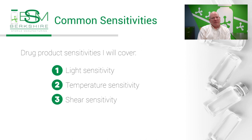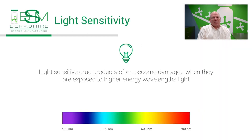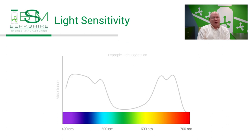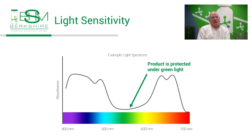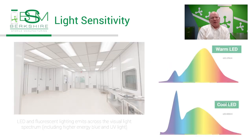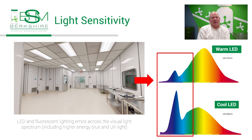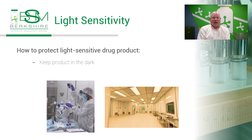Light sensitivity becomes a problem when manufacturing product under fluorescent or white LED lights because these lights emit light across the visible light spectrum, and this can damage the product. Fortunately, we can overcome this by keeping the product in the dark and, if the sensitivity is extreme, by removing the unwanted wavelengths in the lights we use. During formulation, the mixing vessel, the tubing and filters making up the filter assembly, and the sterile vessel we are filtering into are all wrapped to protect the drug product from light.